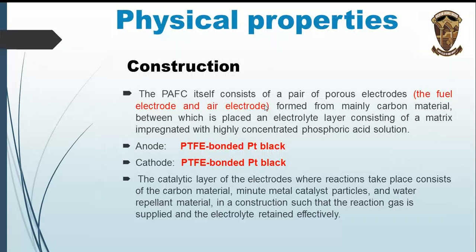The phosphoric acid fuel cell consists of a pair of porous electrodes — the fuel electrode and air electrode — formed mainly from carbon material, between which is placed an electrolyte layer consisting of a matrix impregnated with highly concentrated phosphoric acid solution. Both anode and cathode are PTFE-bonded platinum black. The catalytic layer consists of carbon material, minute metal catalyst particles, and water-repellent material, structured so that reaction gas is supplied and electrolyte is retained effectively.